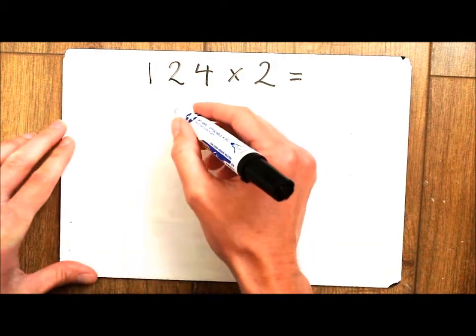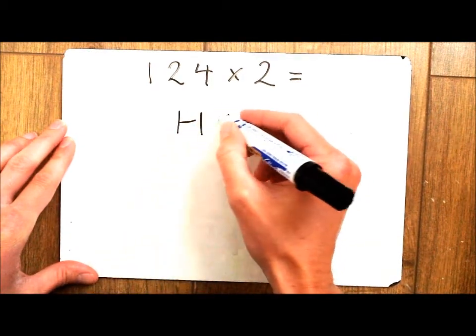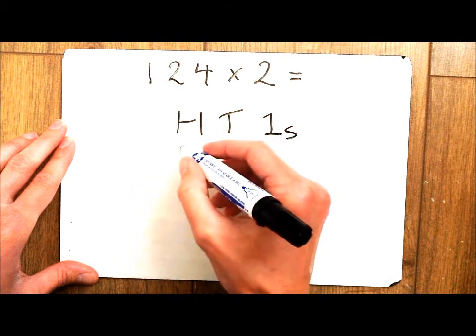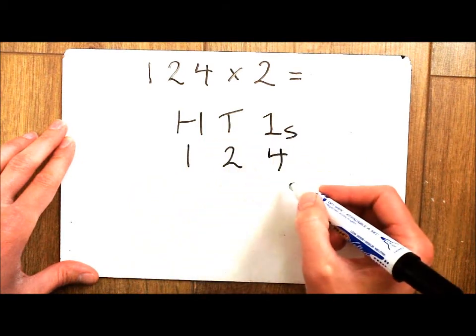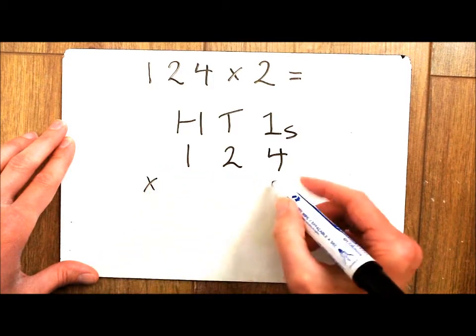I would then use my place value knowledge to set up the sum in the correct headings and I am multiplying by 2.